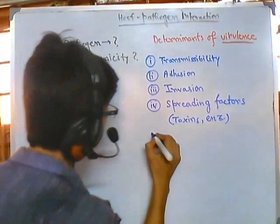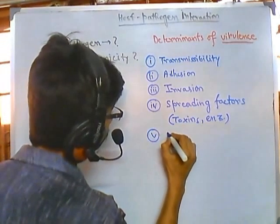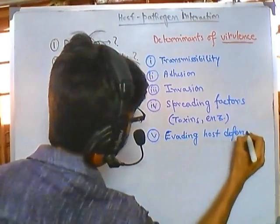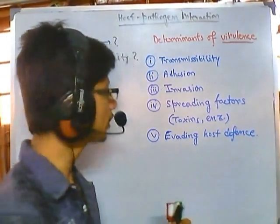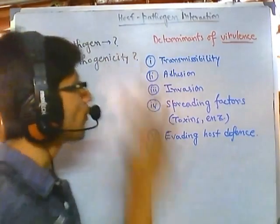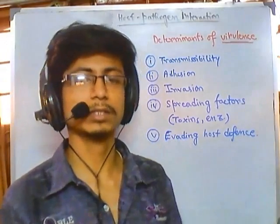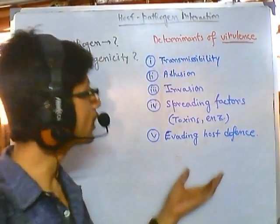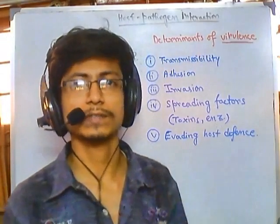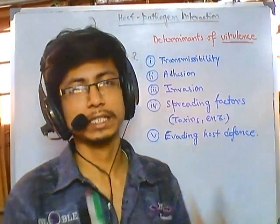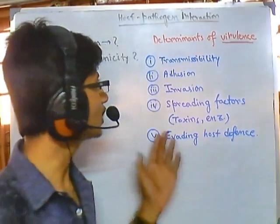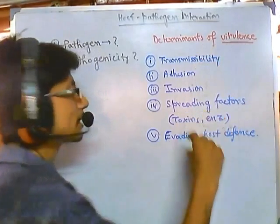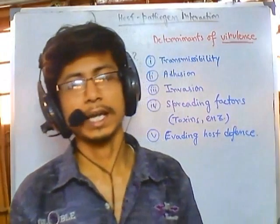Finally, the fifth determinant is evading the host defense — meaning the pathogen evades the host's immunological response. So for a pathogen to set a perfect infection and cause disease, it must fulfill all five of these important criteria. Only then does it gain the ability to transfer disease from one individual to another. These are the determinants of virulence, and in future videos we will discuss each of these sections in detail.